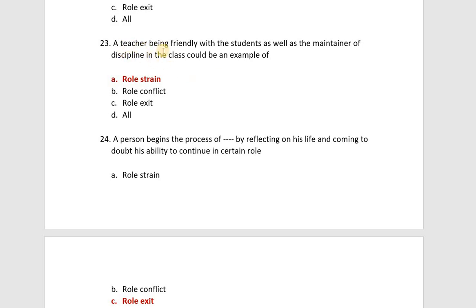A teacher being friendly with students as well as maintaining discipline in class could be an example of role strain. You have to understand this example well because in the paper, they may give you a different example and ask you to identify the concept.